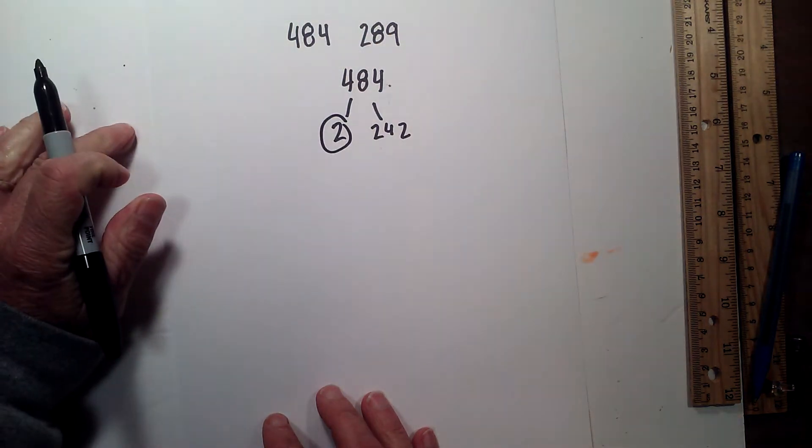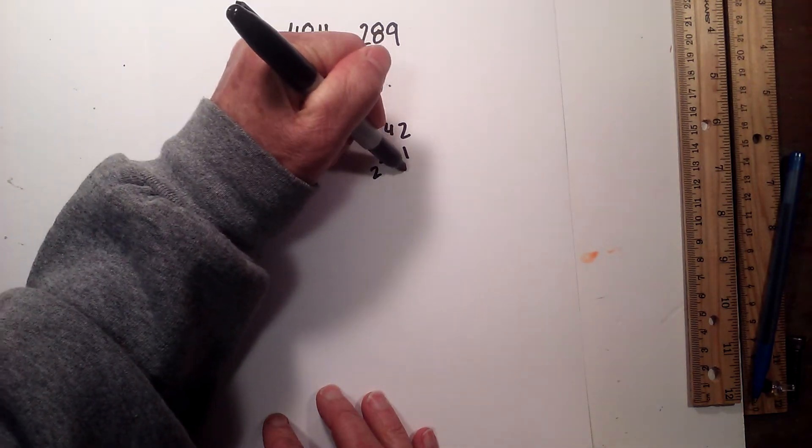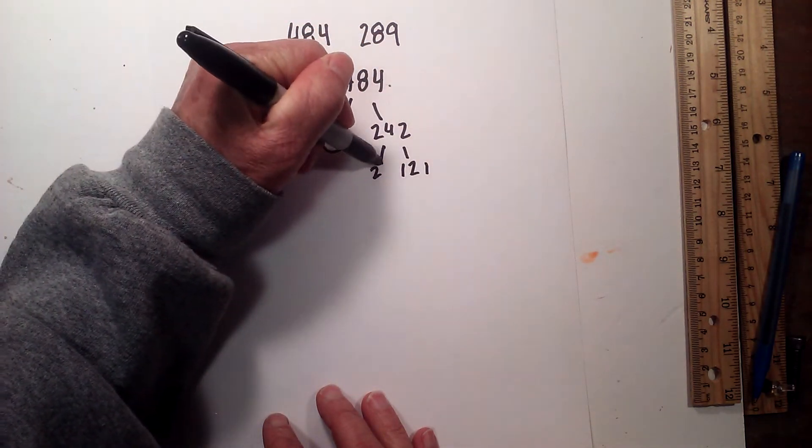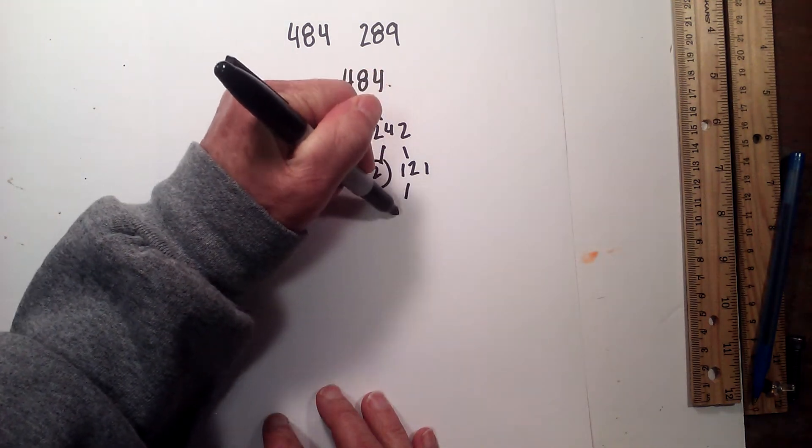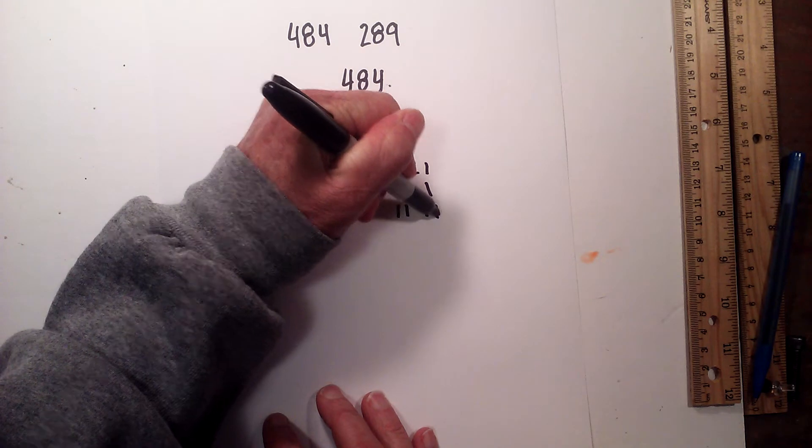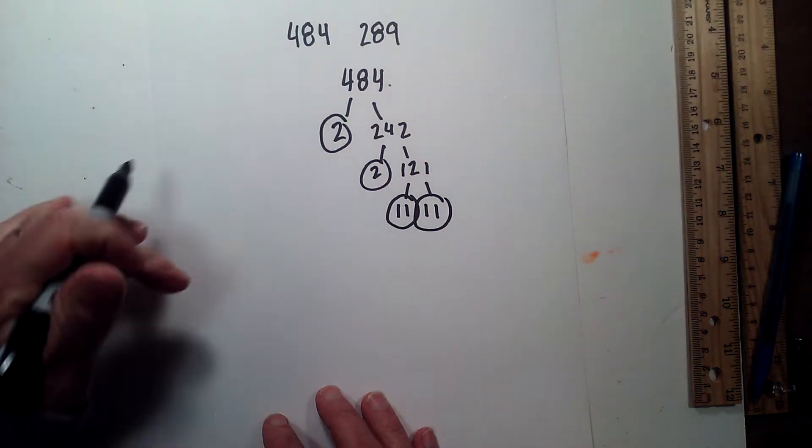I will circle the 2 because 2 is a prime number. Next, 2 goes into 242, 121. I will circle the 2 again because it is prime and then finally 11 times 11 equals 121. Circle both 11's because it is prime.